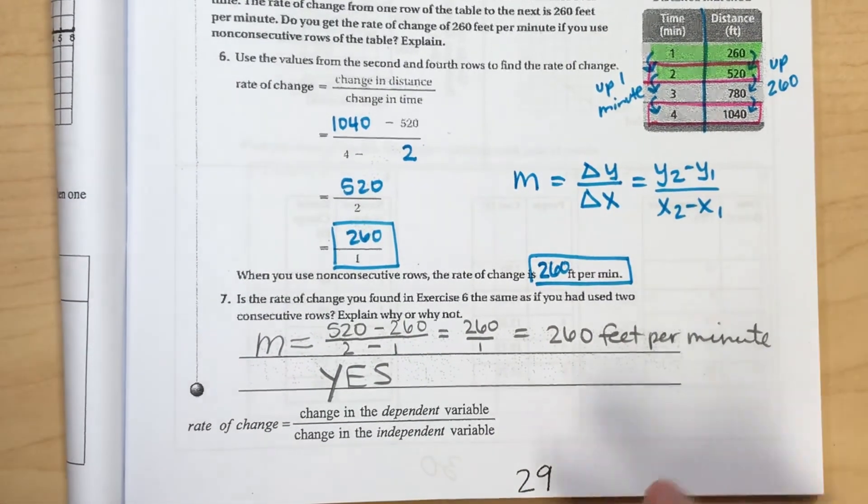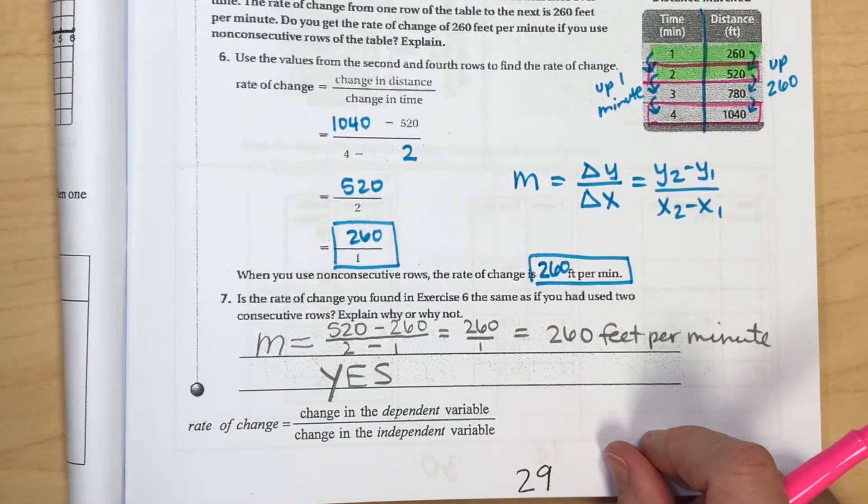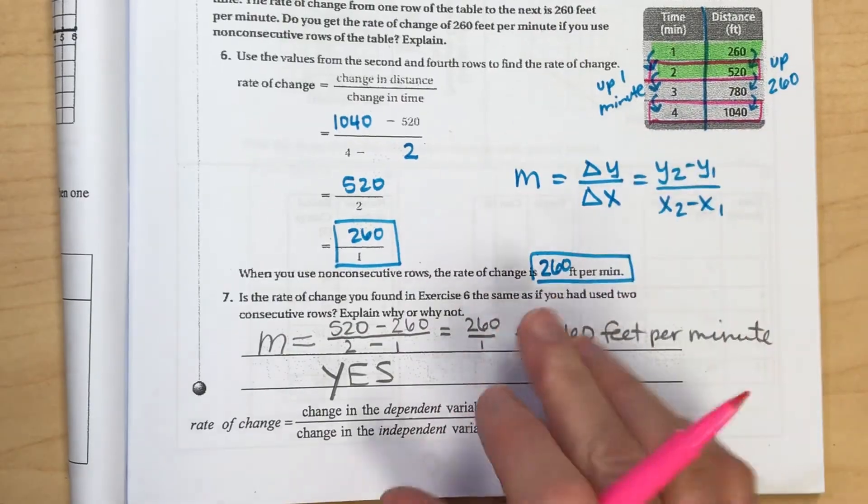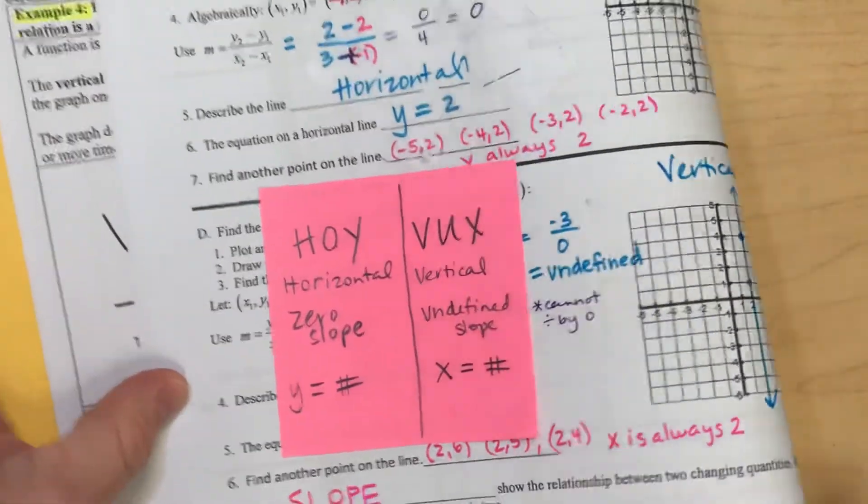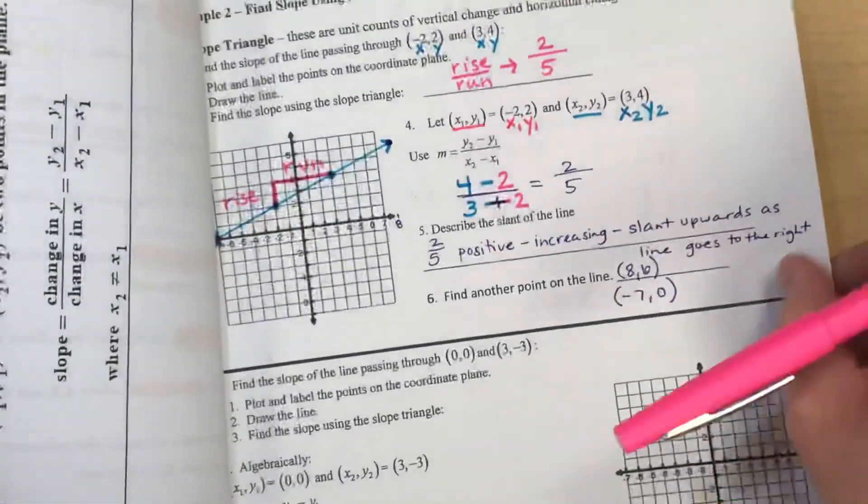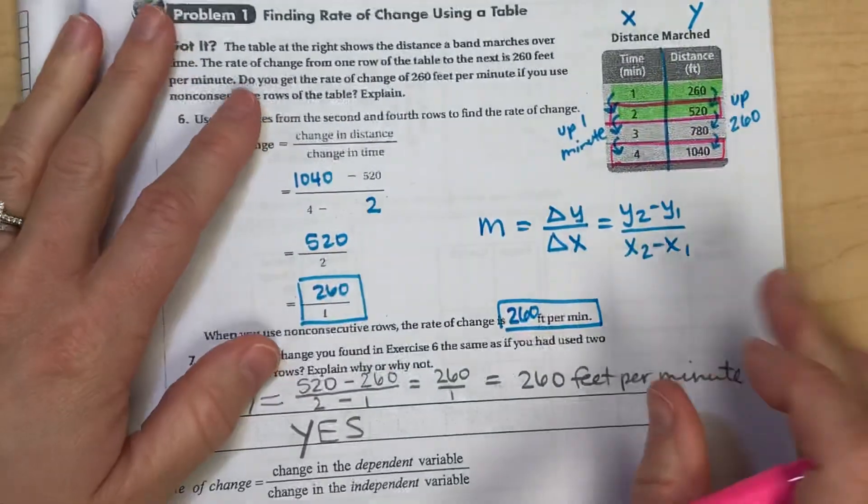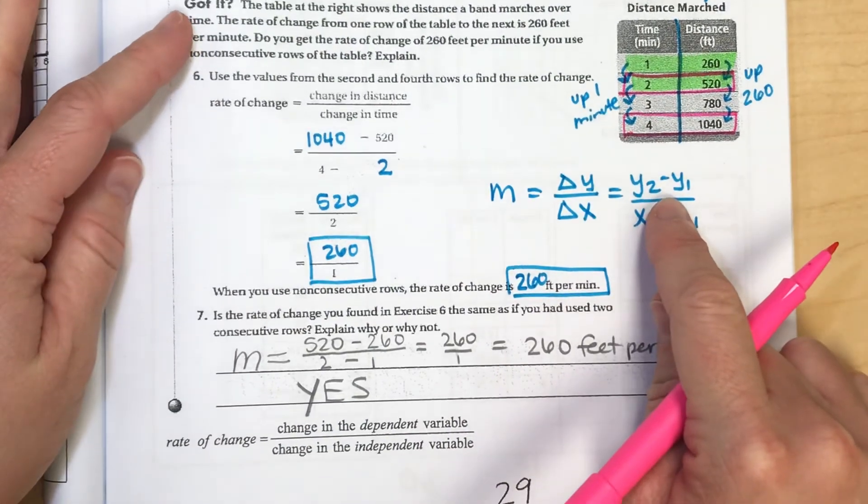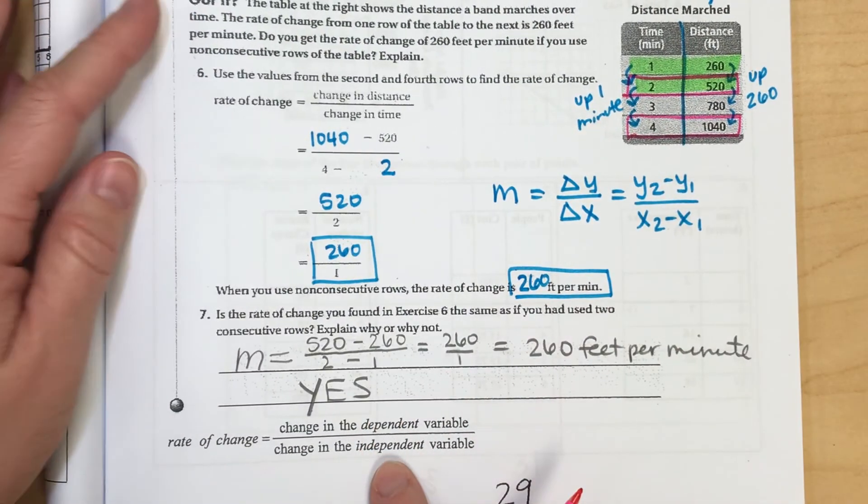So again, slope, you can find it a couple different ways, whether you had a table, or whether you were looking at a graph, or whether you were just using two random points on your graph. So there's a lot of ways to find slope. But the general formula remains the same: change in y over the change in x.